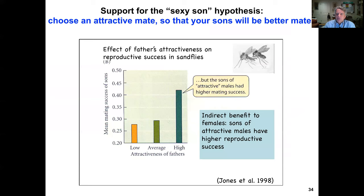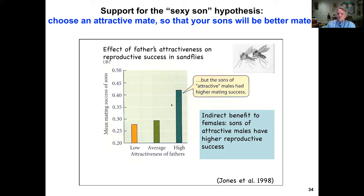Support for the sexy son hypothesis: a study of sand flies examined the effect of father's attractiveness on reproductive success, looking at mating success of sons relative to attractiveness of fathers. The offspring of females that chose highly attractive fathers showed high mean mating success relative to other attractiveness categories. So the indirect benefit to females is that sons of attractive males achieve higher reproductive success.